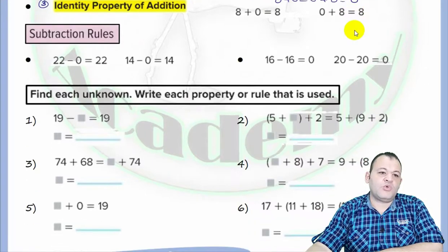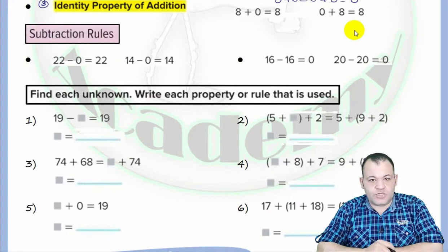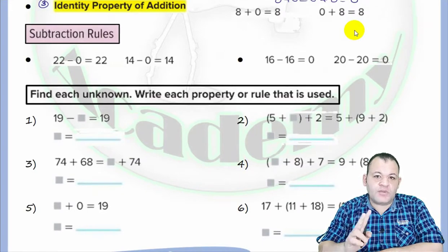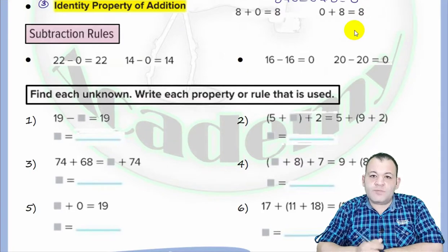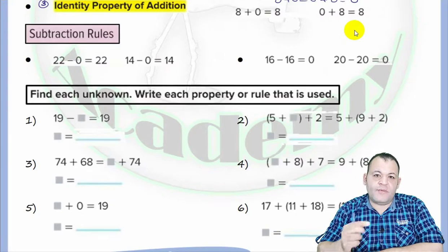We also have the subtraction rule. We covered three properties of addition, and there are two rules in subtraction. The first rule: if you subtract zero from any number, you will find the same number. The second rule: if you subtract a number from itself, the answer will be zero.